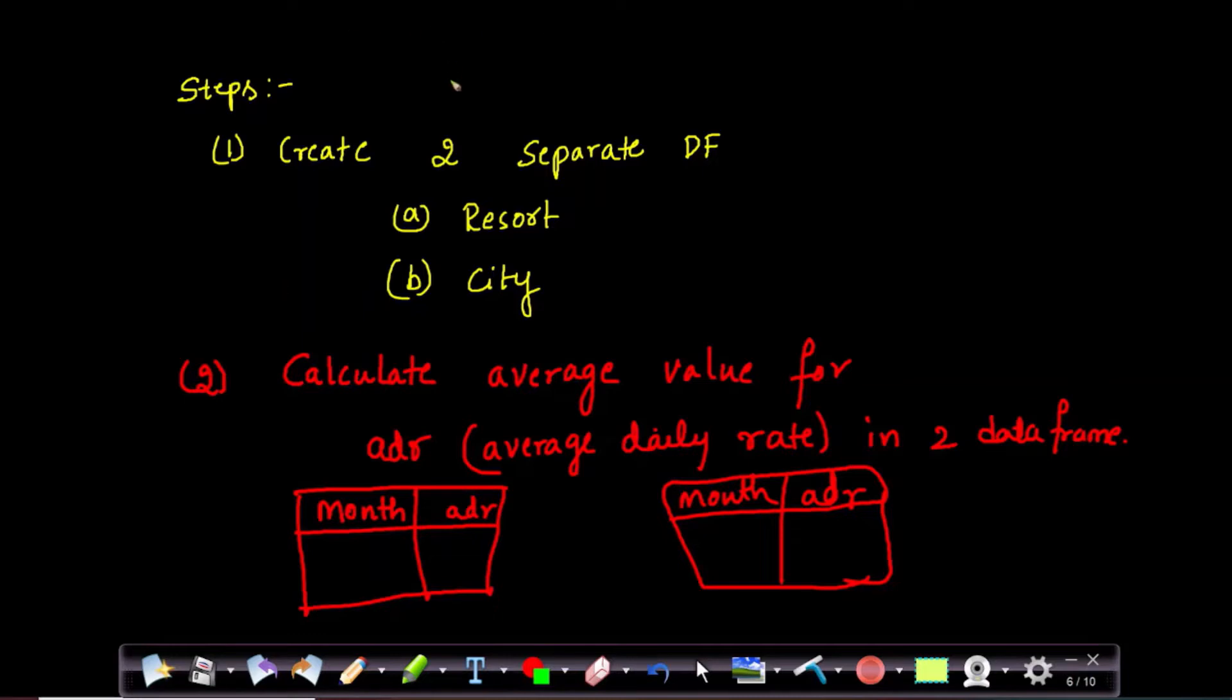First thing, we have a data set but what do we want to do? We want to draw two lines. One is for resort and the other one is for city. So, first thing, we want two different data frames. So, create it. Create two separate data frames. One is resort and the other one is city. In this resort data frame, you must have resort data and make sure that you are having valid entries. That means, is cancelled should be zero. That means, the hotel booking should not be cancelled. Same thing goes here. In this city data frame, have only city hotel data and is cancelled it should be zero.